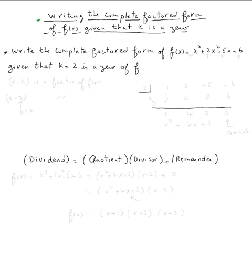So remember, you need to know if k equal two is a zero of f, that means x minus k is a factor—there's a theorem. So x minus k is a factor of f of x. In other words, in this case, x minus two is a factor of f of x.